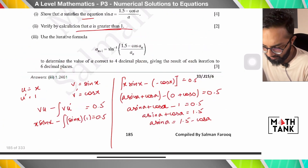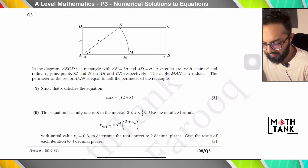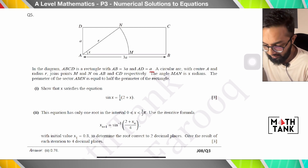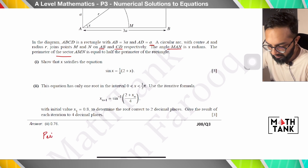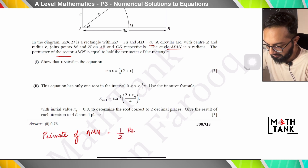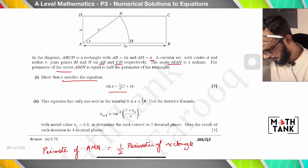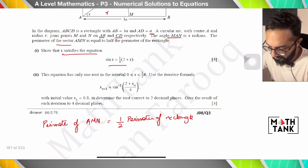Question 5: In the diagram, ABCD is a rectangle with AB = 3a and AD = a. A circular arc with center A and radius r joins M and N on AB and CD respectively. The angle MAN = x radians. The perimeter of sector AMN equals half the perimeter of the rectangle. Show that x satisfies the given equation.